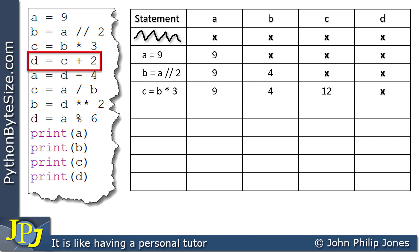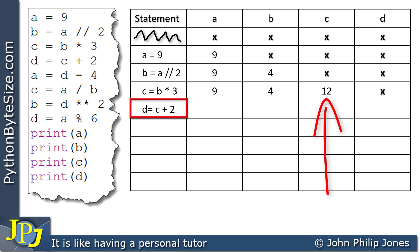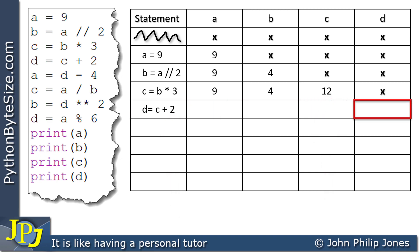We now go on to this program statement: D is assigned C plus 2. Scanning across, C is 12, and we're adding 2 to it, so we place the value 14 in the D column. A, B, and C are unchanged, so we copy those values down from above.